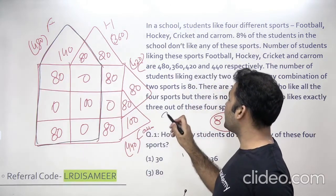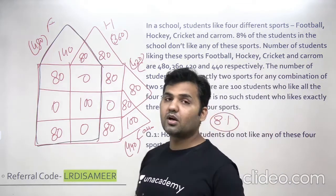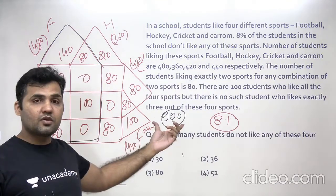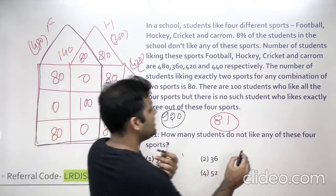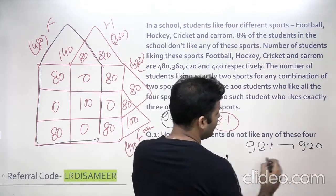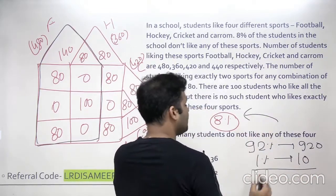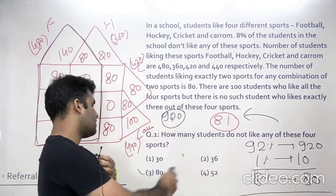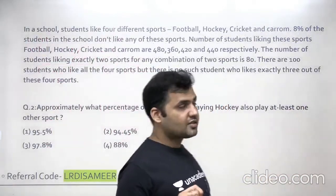The union of 920 represents the number of students who belong to at least one of the four sports — that is 92% of the total students. So if 92% equals 920, then 1% equals 10, and 8% of total students equals 80. The answer to the first question is 80, which is option number three.